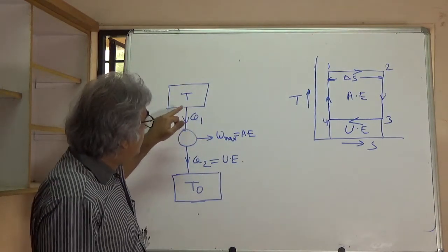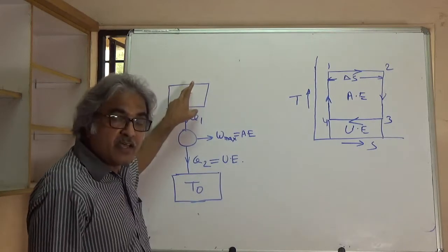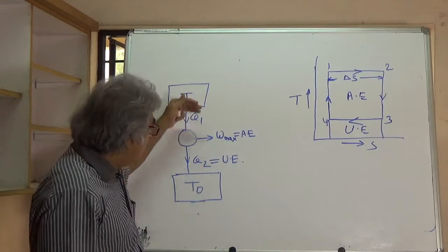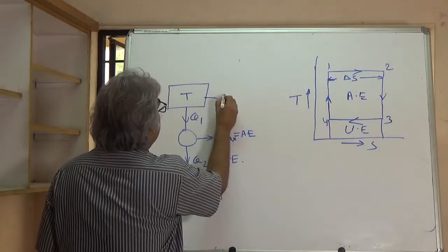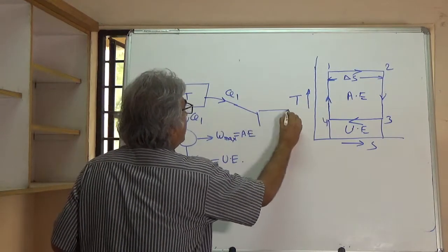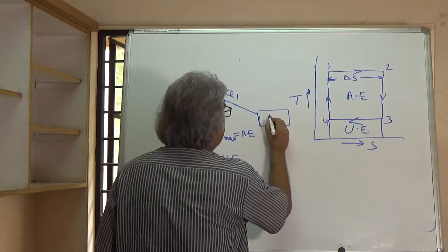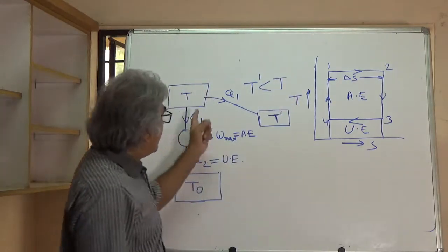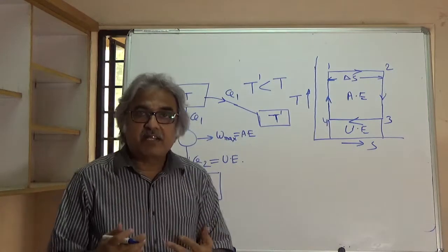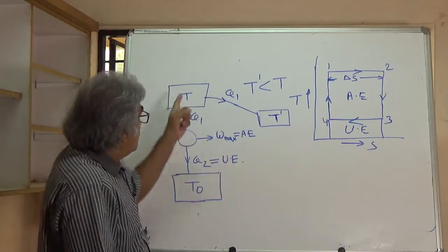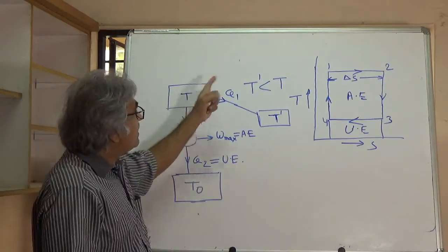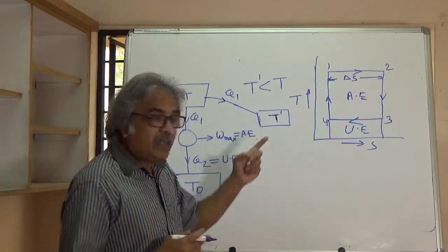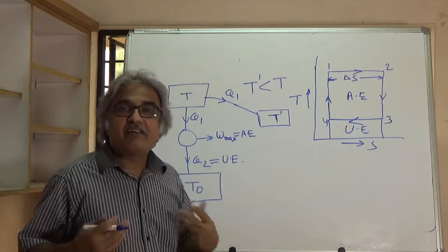Now let's say the same amount of heat Q1 goes to some other body instead of going directly to the Carnot engine. This other body is at a lower temperature T dash, where T dash is less than T. So there is irreversible heat transfer, because heat transfer has taken place across a finite temperature difference. The same amount of heat Q1 is now received by a body at a lower temperature T dash.